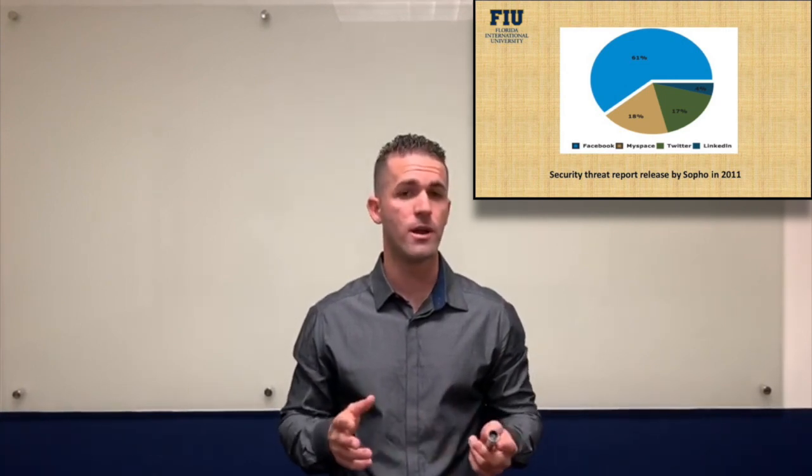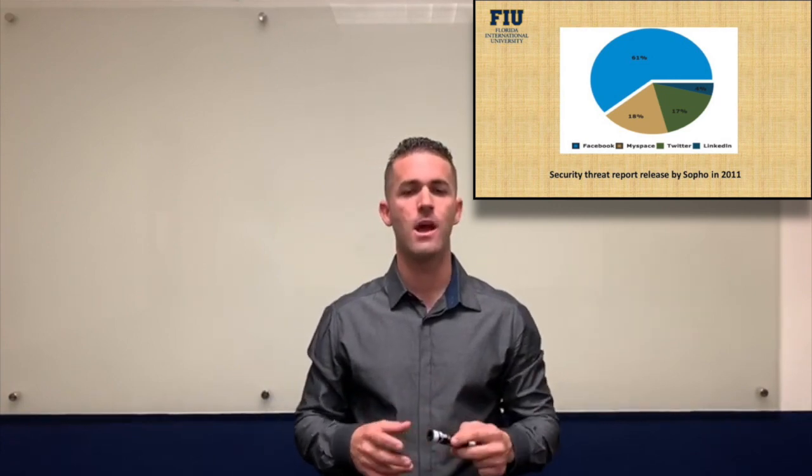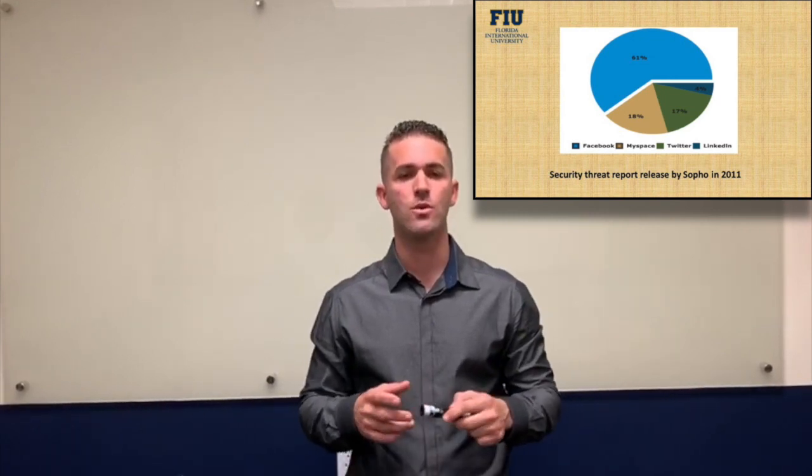Now I'm going to give you a quick review with numbers, which is really important when talking about statistics regarding network apps we use nowadays. People use some apps more than others, meaning we have more risk on specific social networks. According to SOFO in 2011, on Facebook we have 61% of social security threats, on MySpace 18%, on Twitter 17%, and curiously on LinkedIn only 4%. This is because LinkedIn is only for professional use. As engineers, we all need to have a LinkedIn account in order to build connections for future projects.